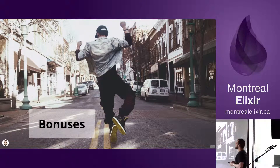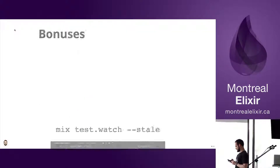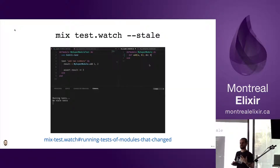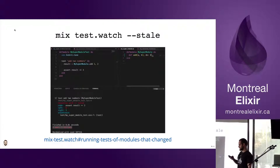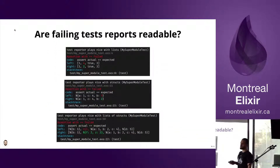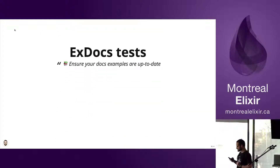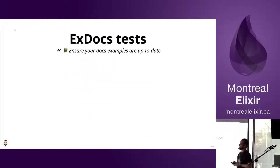Now for some bonuses with Elixir. The first one I was amazed by: in watch mode, you can run only the tests you've modified — you don't have to run the entire test suite, which is really nice. I was also wondering about failure reports when you have structs or lists of structs — is it readable? In Elixir, I was surprised that it's really readable, as you can see.